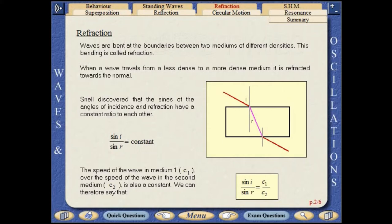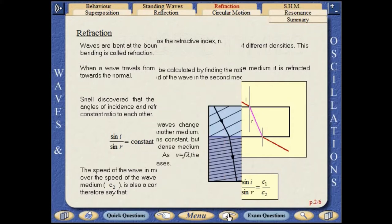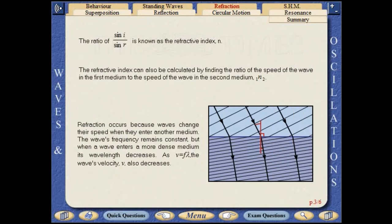The speed of the wave in medium 1 divided by the speed of the wave in medium 2 is also a constant. The ratio of sine i over sine r is known as the refractive index. The refractive index can also be calculated by finding the ratio of the speed of the wave in the first medium to the speed of the wave in the second medium.